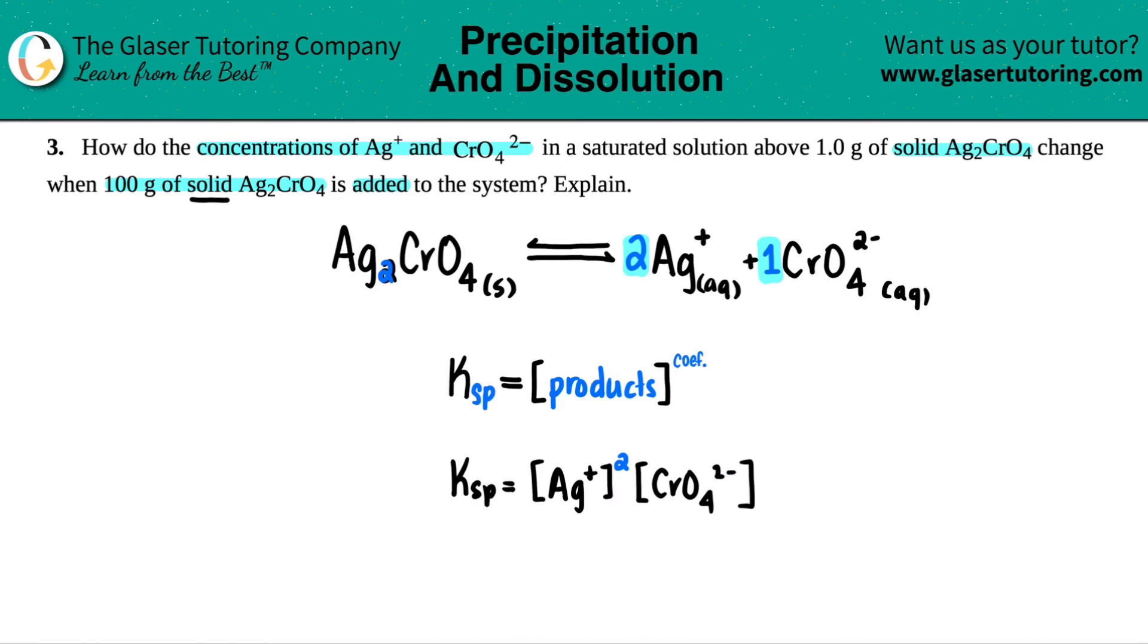So that kind of gives you an idea as to what's going to happen. Are these concentrations going to increase or decrease when we add solid amount of the Ag2CrO4? Well, since the solid is not in the KSP, is there going to be any change? Nope. You could add as much solid as you want. Nothing's going to happen. So for this case, there's going to be no effect, no effect for both the Ag and the CrO4 minus.